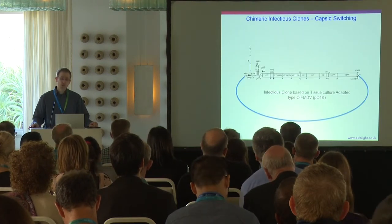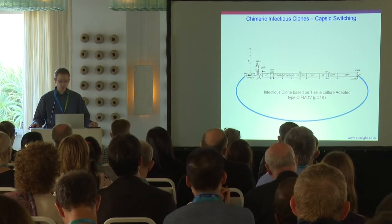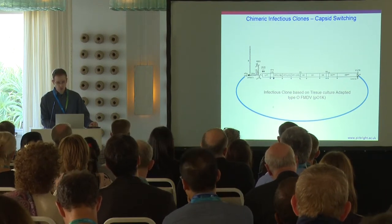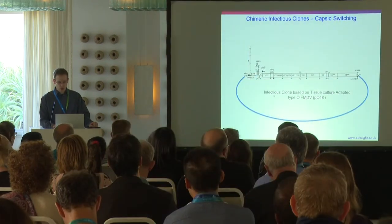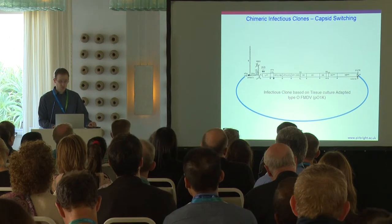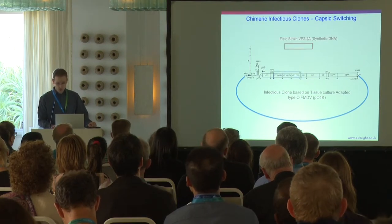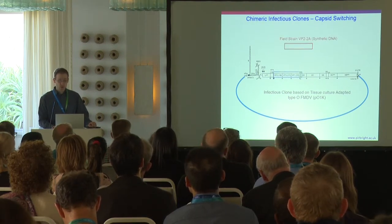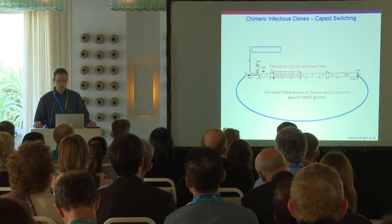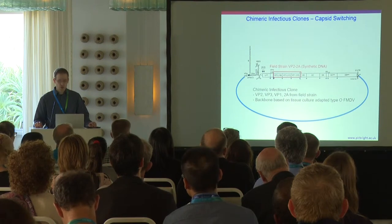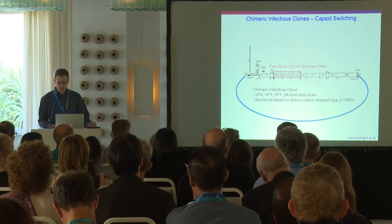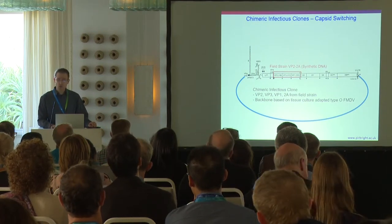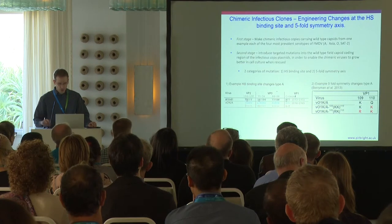The first stage in this work was to create chimeric infectious clones by capsid switching. We start off with our infectious clone based on tissue culture-adaptive type O FMDV. This is a plasmid containing a cDNA copy of the genome. And then we swap VP2, VP3, VP1, and 2A from a field strain into the clone to produce a chimeric infectious clone with the capsid proteins and 2A from the field strain and a backbone based on tissue culture-adaptive type O.